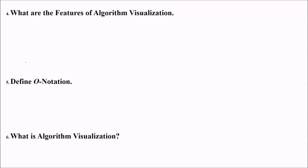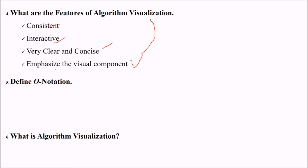What are the features of algorithm visualization? First is the consistency, interactiveness, close, clear and concise and then emphasizing the visual component. These are the algorithm visualization features.